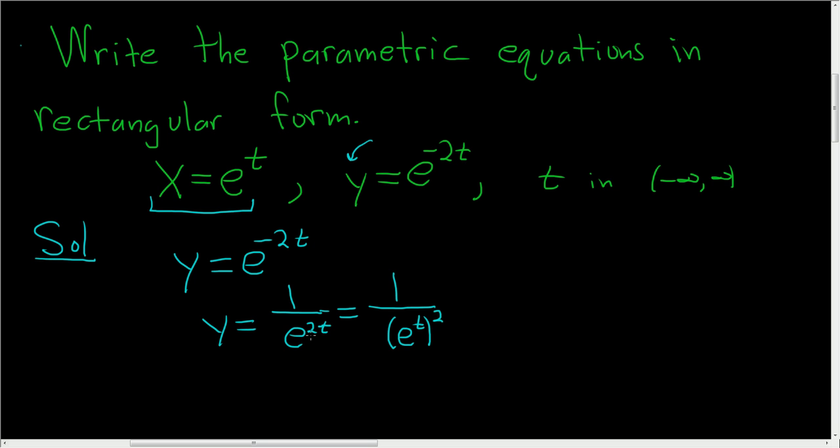Right? 2 times t is 2t, so all is good. We know that e to the t equals x. So this is 1 over x squared. The answer is y equals 1 over x squared.